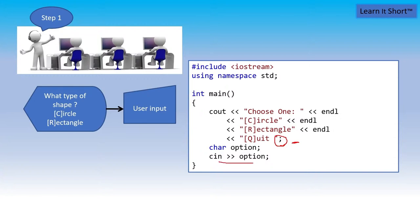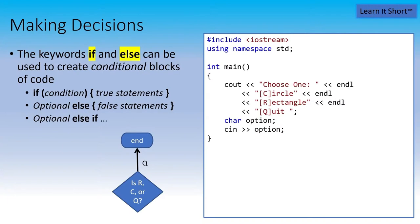Now, once the user has entered something, we need to make a decision on what it is that they entered. So we need to talk about if and else. Those are used to create conditional blocks. So inside curly braces, we can have all of the statements that we want to execute if a condition is true. Optionally, the else, a block of statements that we'll execute if that condition was false. We can also use else if to chain together multiple conditions. So let's implement the logic where we sort out whether it's a Q, a C, or an R.